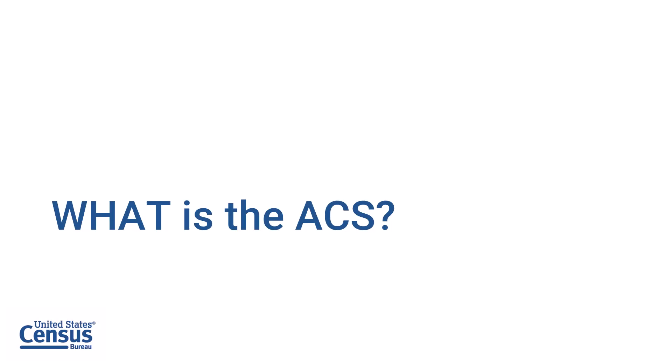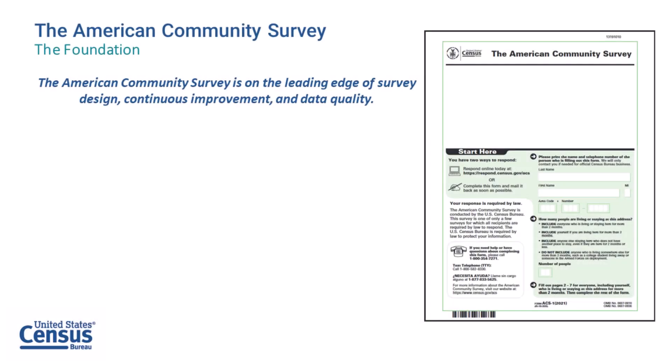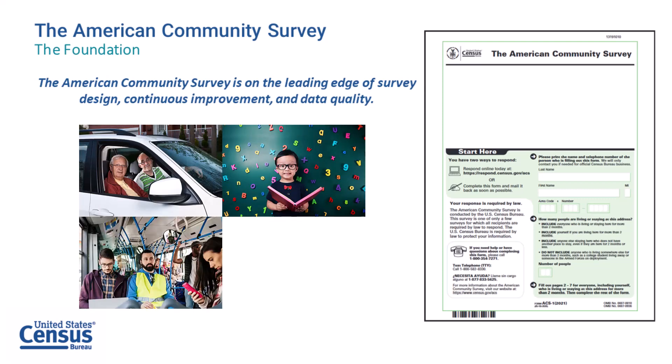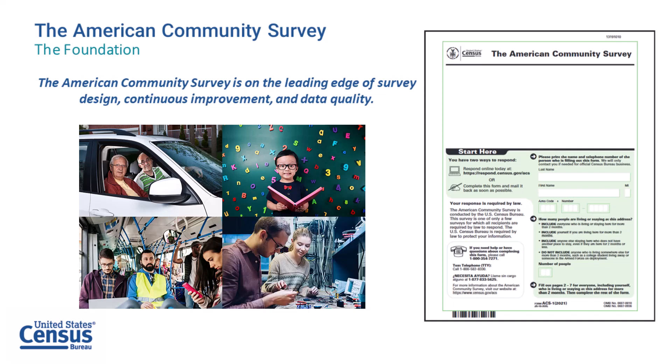What is the ACS? The ACS is the nation's most current, reliable, and accessible data source for local statistics on critical planning topics such as age, children, commuting, education, and employment. It's a household survey conducted by the Census Bureau that samples about three and a half million addresses each year. These data are collected throughout the year and are used to inform the distribution of hundreds of billions of dollars in federal government spending each year.